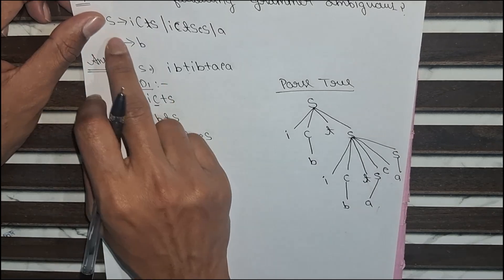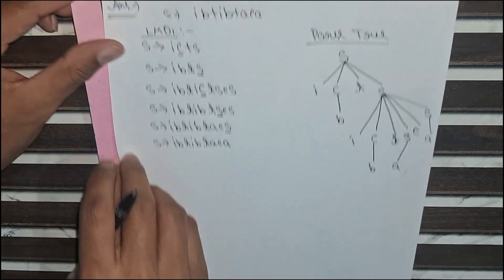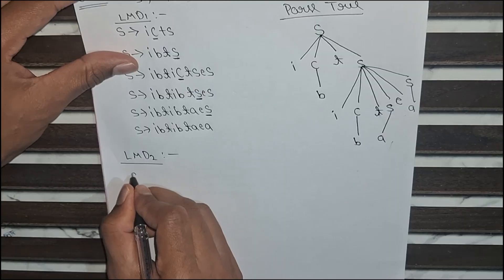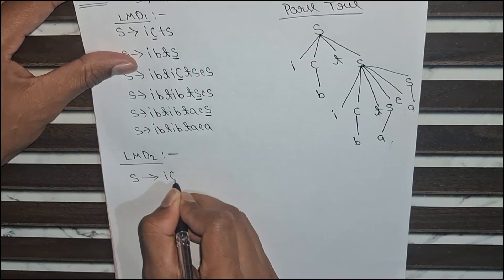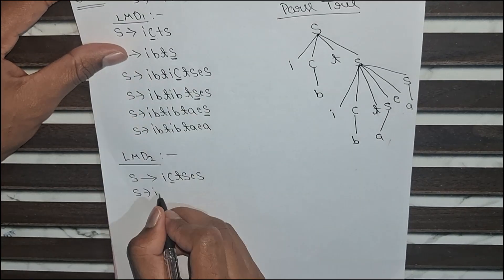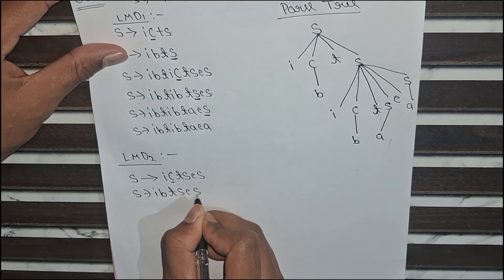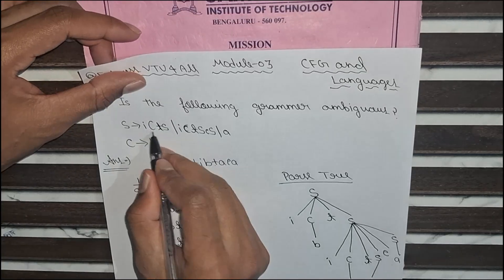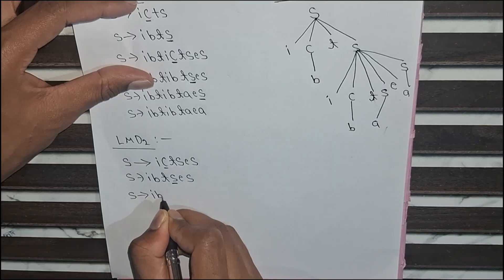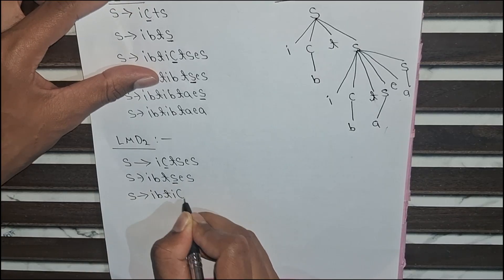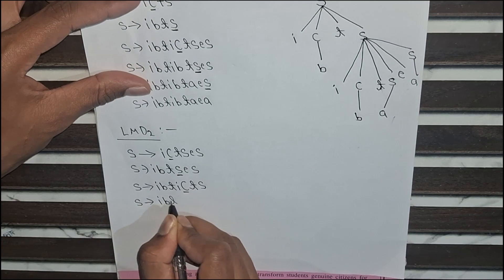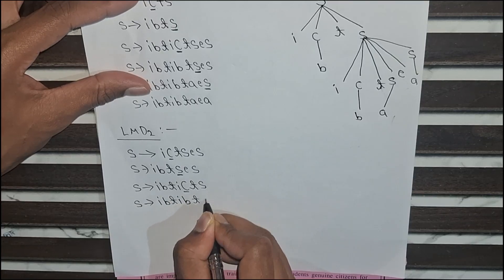Now I will put S as i c t S e S and get this string — I will name this LMD2. The initial step is S → i c t S e S. The leftmost variable comes next, so I put c as b: i b t S e S. Now I substitute S as i c t S, giving S = i b t i c t S. Then I substitute c as b: i b t i b t S.